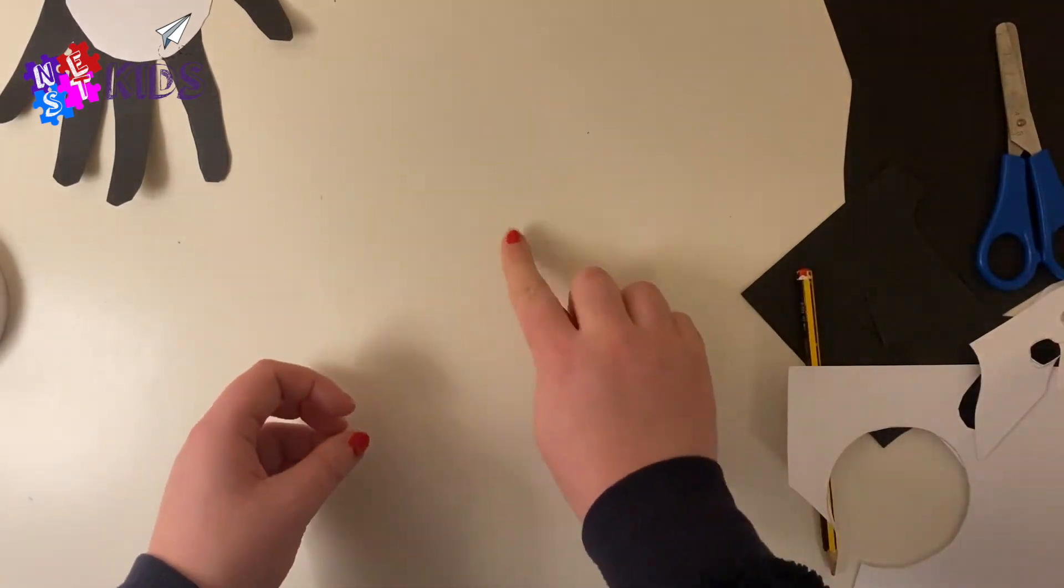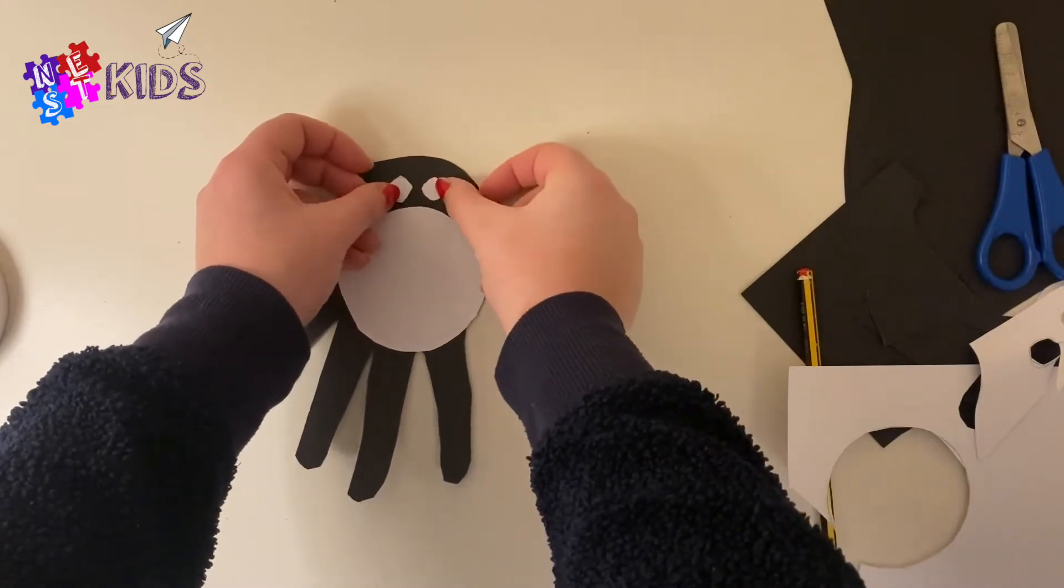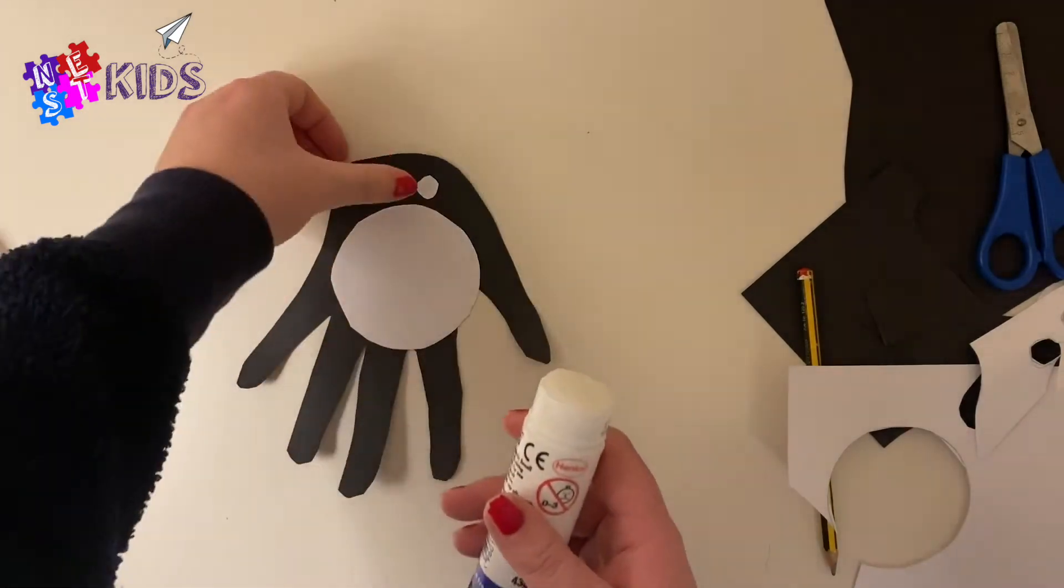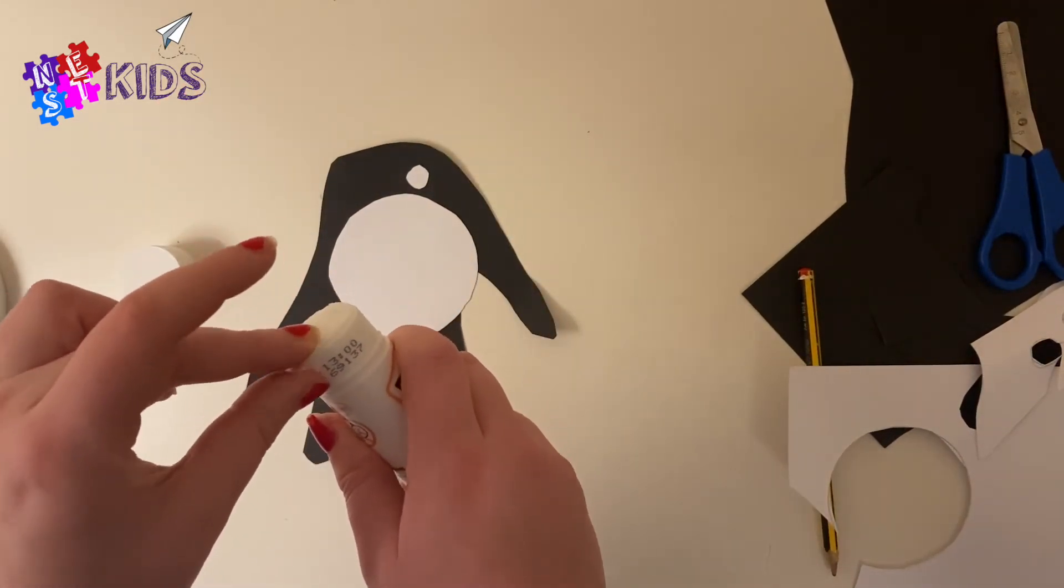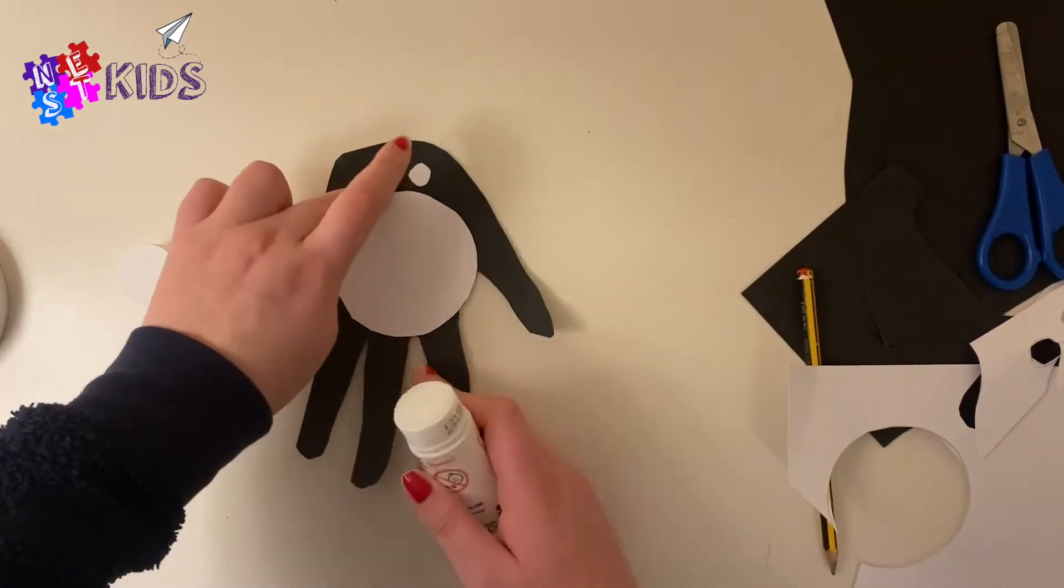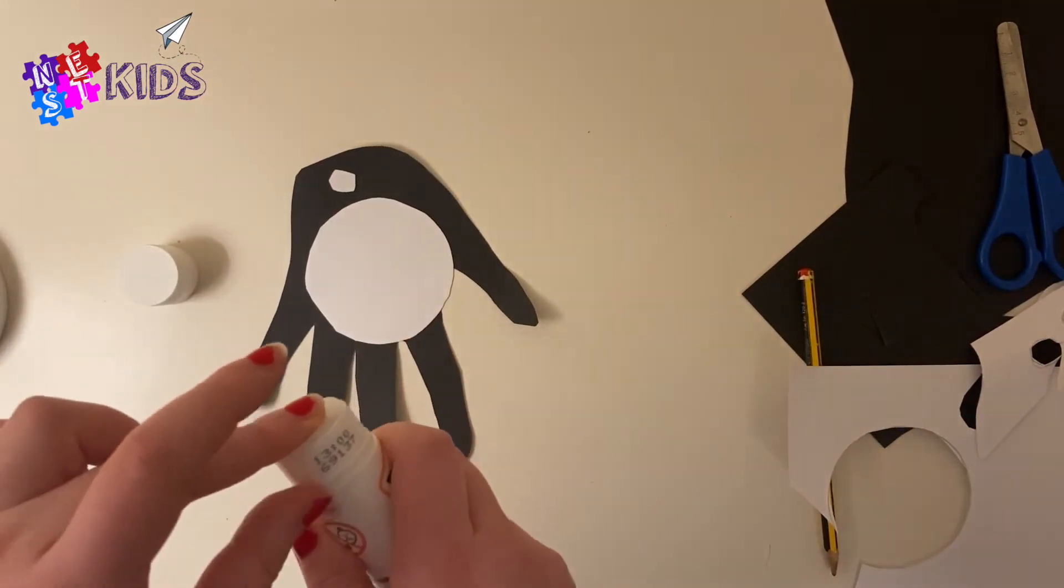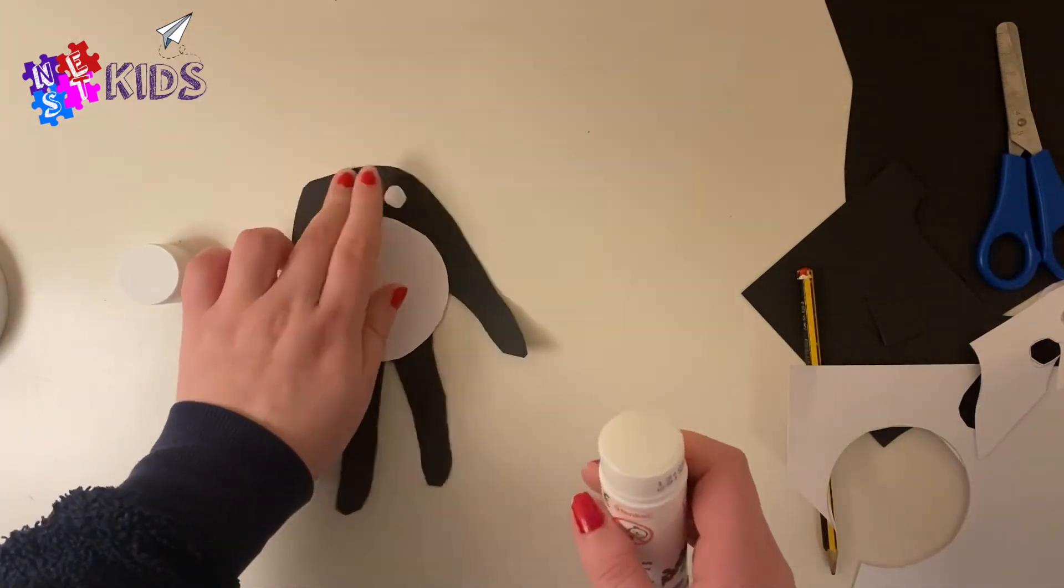You've got two white eyes that you need to stick down on your penguin. Get your glue, make the back nice and sticky, and then stick it down where the eyes would be at the very top of the penguin, like I've done here.